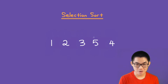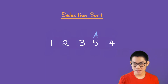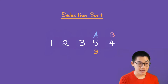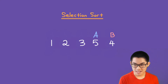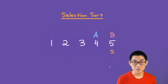We start over and put A on the fourth element. A says to B, find me the smallest element in this array. B assumes 5 is the smallest element. Is 4 smaller than 5? Yes, so 4 is now the smallest number. Since B is at the end of the array, we swap 5 and 4. And that's it — we have sorted the array from least to greatest.